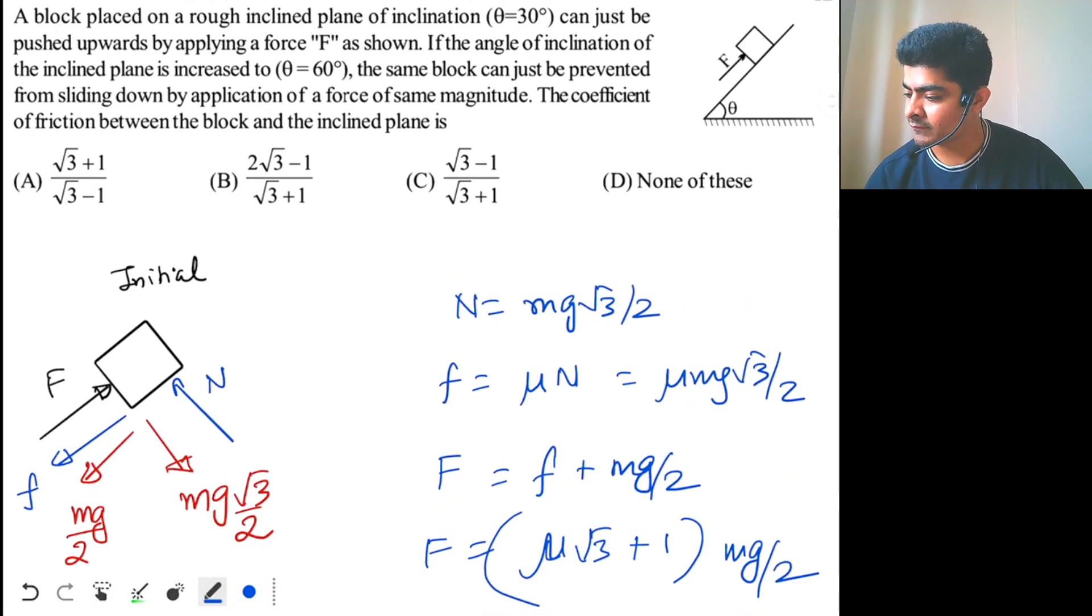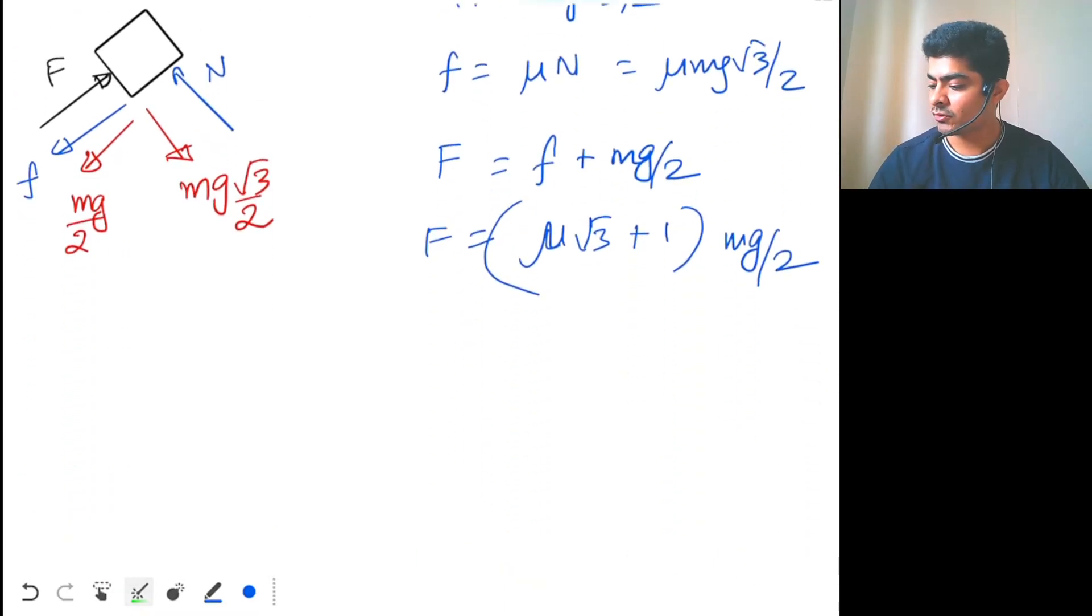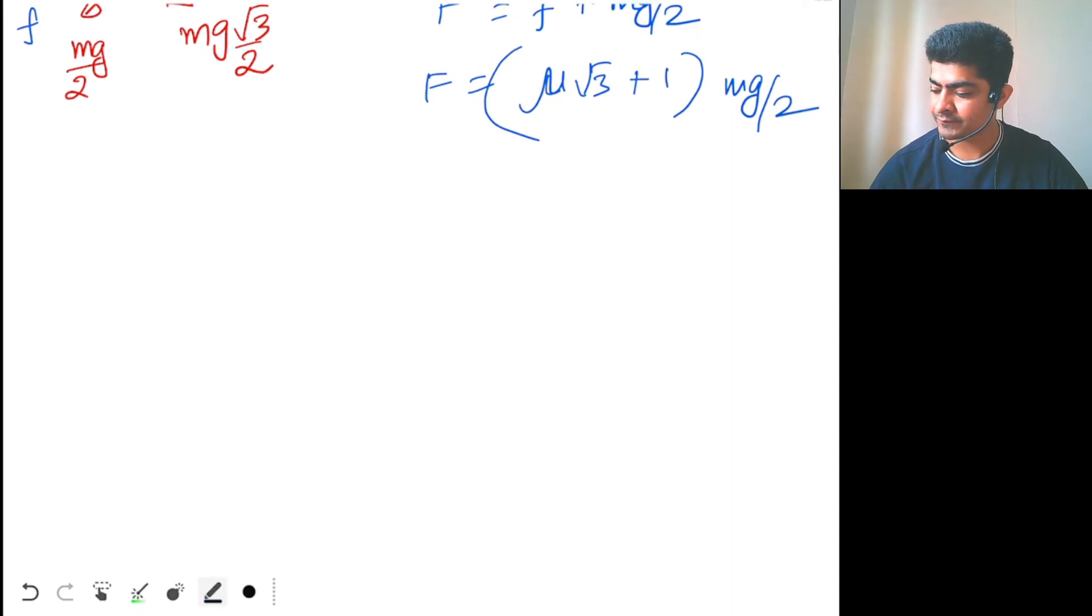if the angle of inclination of the inclined plane is increased to 60 degree, the same block can just be prevented from sliding down, just be prevented from sliding downwards now. So in second case, what will happen, let's just write down second case,